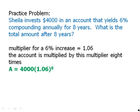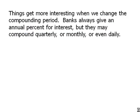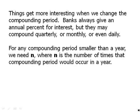Things get more interesting when we change the compounding period. Banks always give an annual percentage interest, but they may compound quarterly, monthly, or even daily. For any compounding period smaller than a year, we need N — where N is the number of times that compounding would occur in the year.